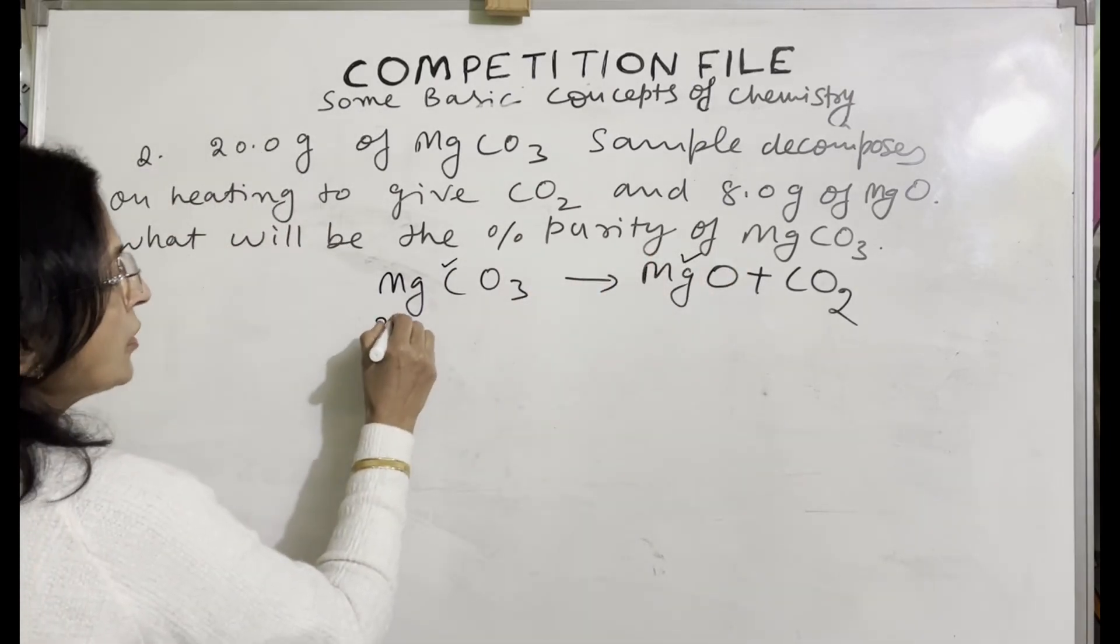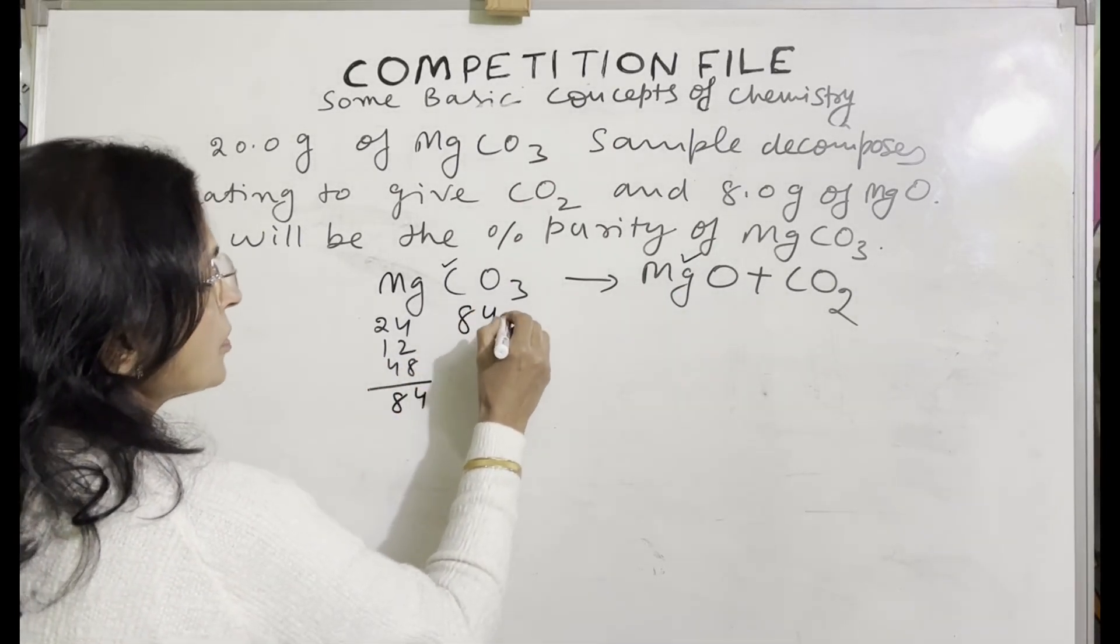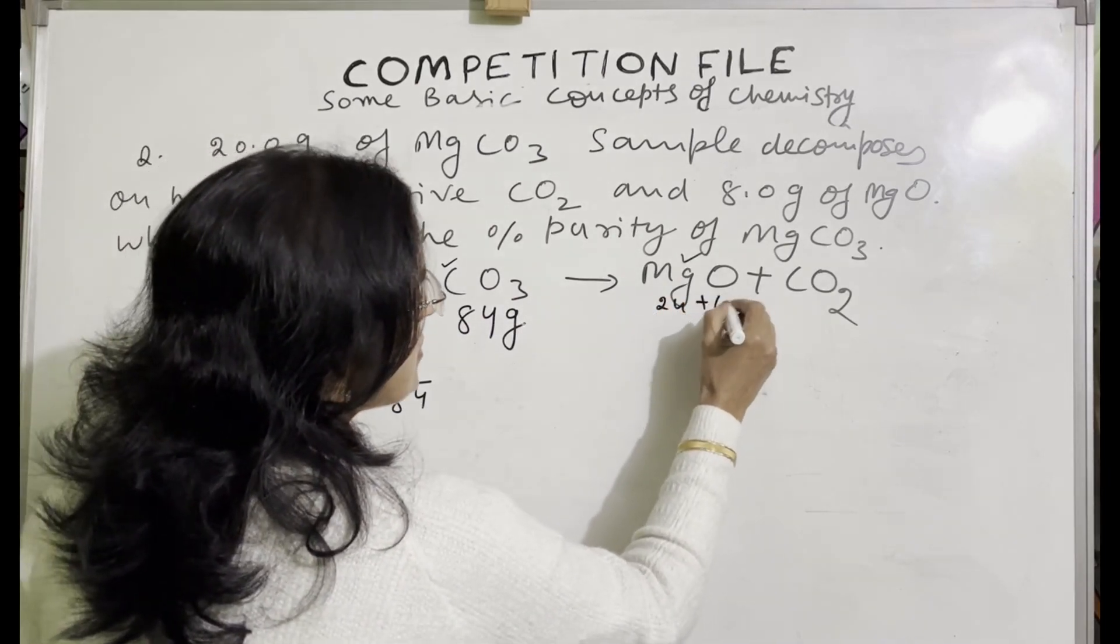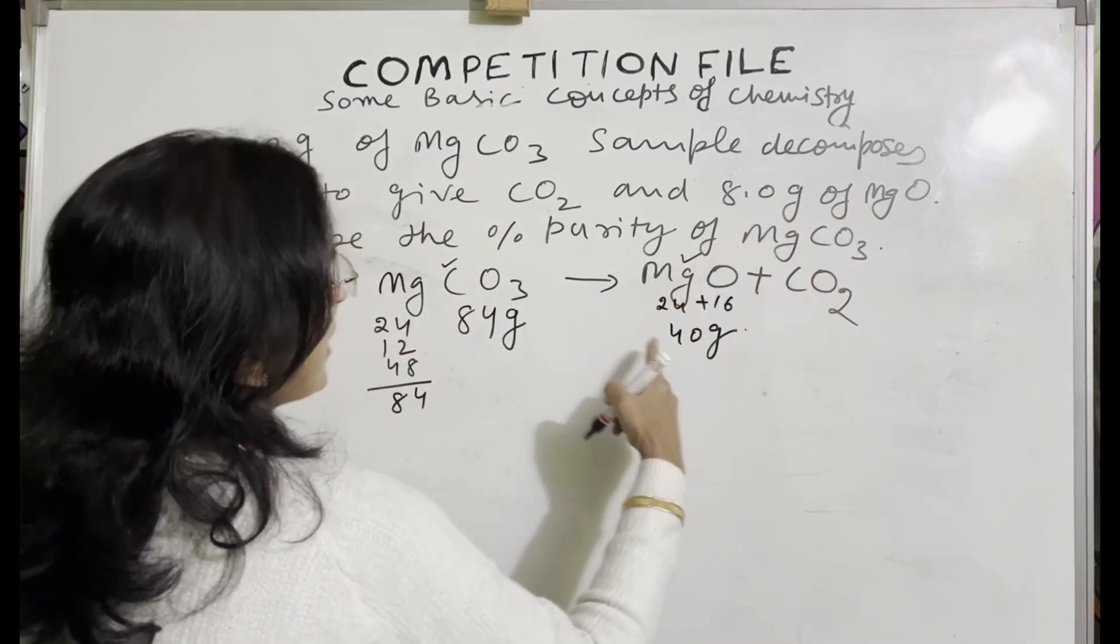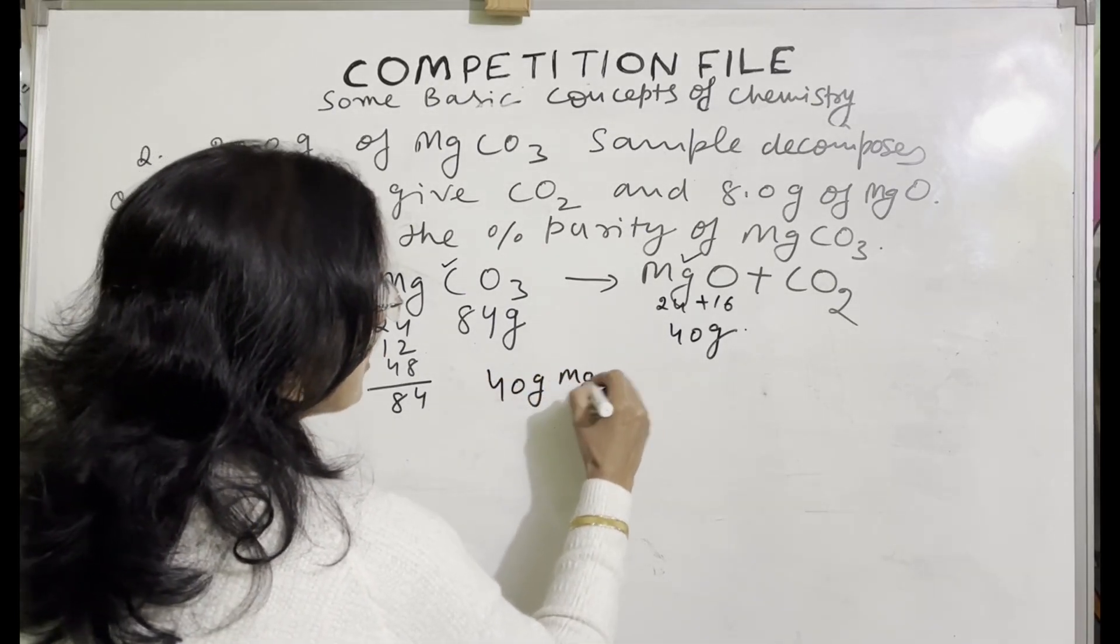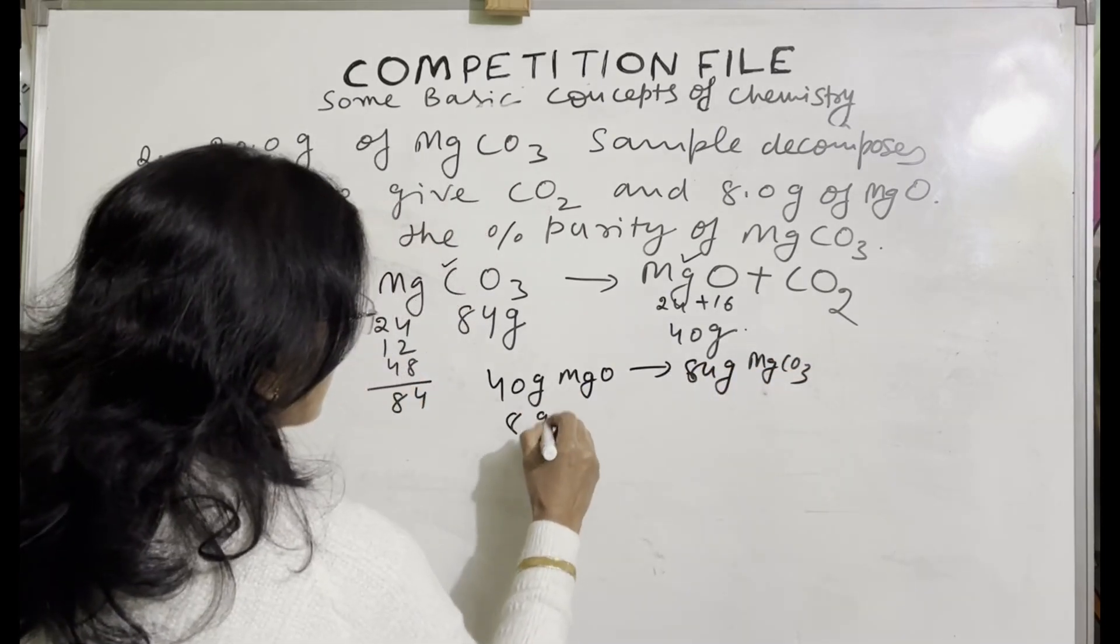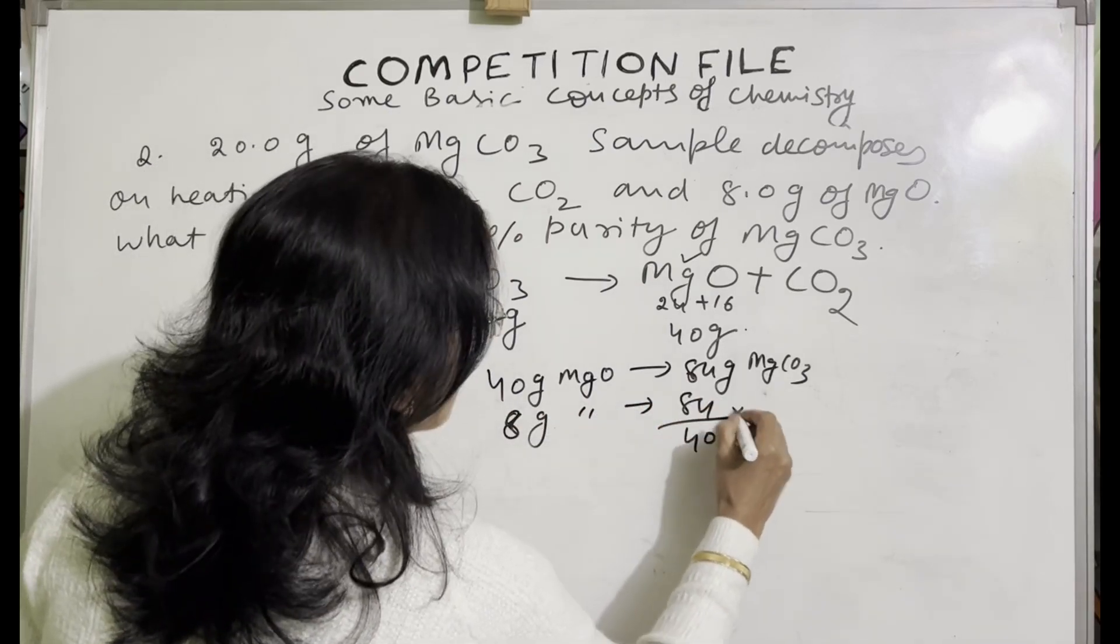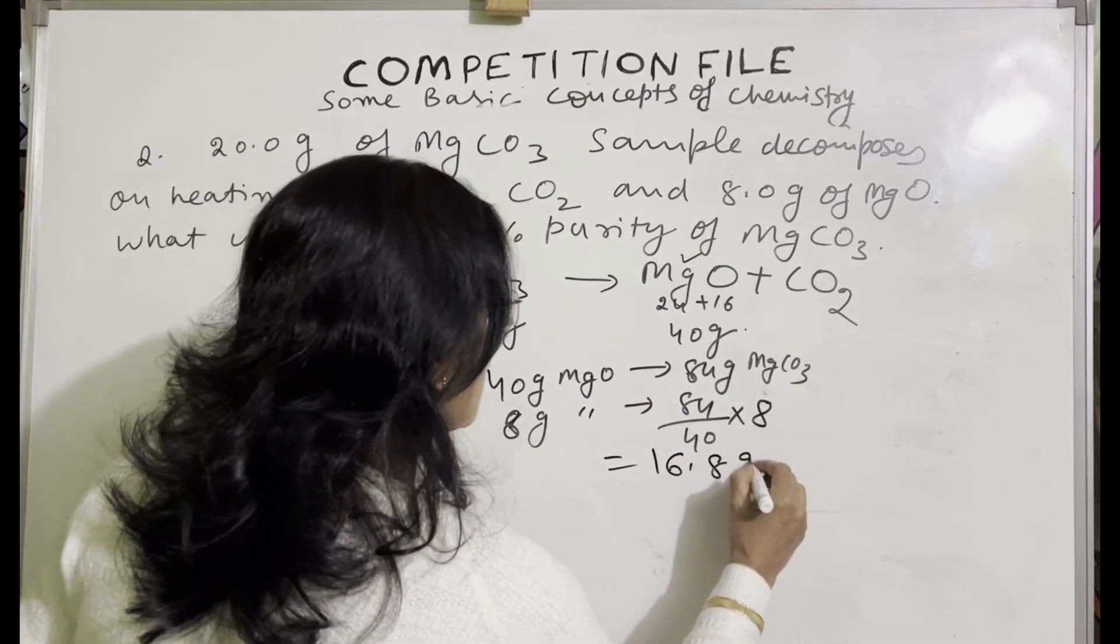So 24 plus 12 plus oxygen 48, it becomes 84. So 84 grams magnesium carbonate will give 24 plus 16, that is 40 grams magnesium oxide. So 8 grams magnesium oxide forms from 84 divided by 40 into 8. Calculate this and the value comes 16.8 grams.